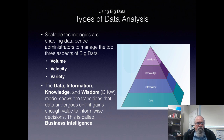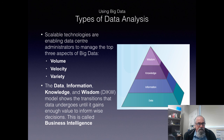At the base of the DIKW model we have data — raw data that doesn't have a great deal of meaning on its own. We need to process it into information. So if we take the vibrations coming from the bridge — what do they mean? It means it's a car, so that's information. We know it's a car and it's moving. We can turn that into knowledge: it's a car travelling on the bridge at a certain speed. Wisdom is then making a decision based on that knowledge — is the car travelling at a safe speed? That's the wisdom of knowing what to do with the data.